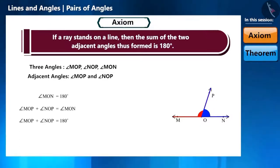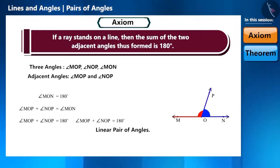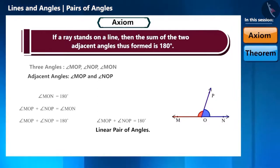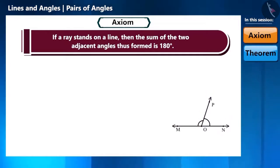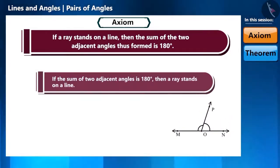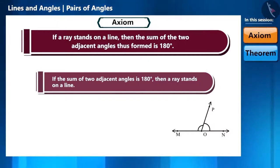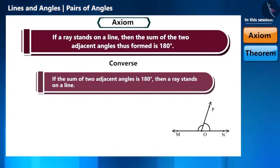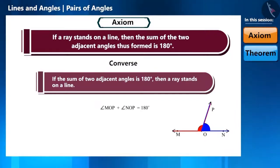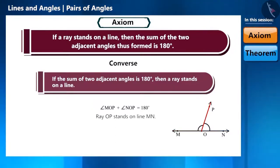If the sum of the two adjacent angles is 180 degrees, then they form a linear pair of angles. The next axiom is completely opposite to this: if the sum of two adjacent angles is 180 degrees, then a ray stands on a line. We call this the converse of the previous axiom. If angle MOP plus angle NOP equals 180 degrees, then we can conclude that ray OP stands on line MN.